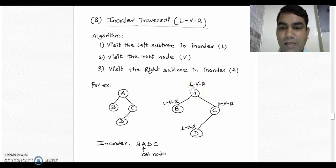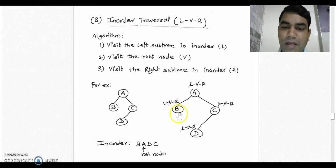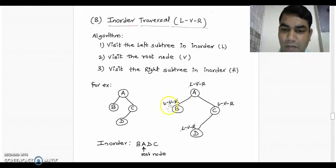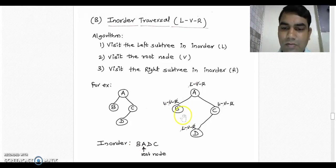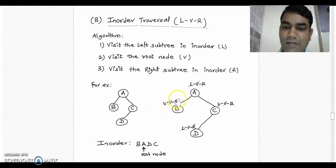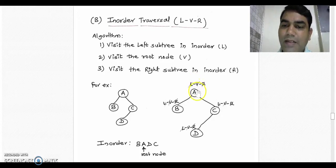We start traversal from the root node. The first letter is L, indicating we go to the left subtree — node B. On top of node B there is LVR, but there is no left subtree, so we cut L. Then V: we cut V and write B into the in-order traversal sequence. There is no right subtree for node B, so we cut R. The left subtree traversal is over, so we cut L on the root. Then V comes: we cut V and write A into the in-order traversal sequence.